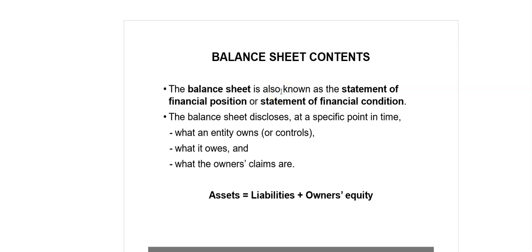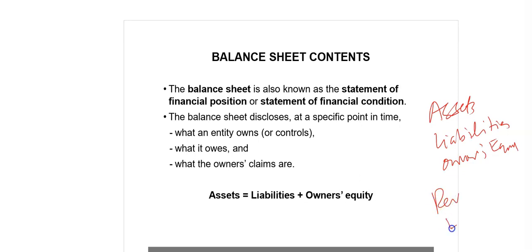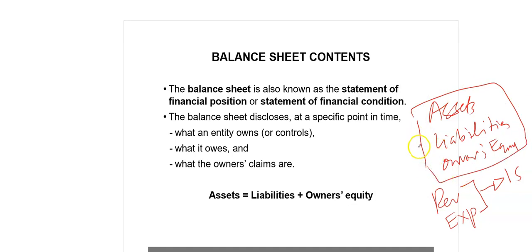We know the five elements of Financial Statements: Assets, Liabilities, Owners' Equity, Revenues and Expenses. Revenues and Expenses are treated in the Income Statement. However, Assets, Liabilities and Owners' Equity are shown in the Balance Sheet. Assets are equal to Liabilities plus Owners' Equity. This is what we learned in our discussion on Accounting Mechanics in Chapter 2.